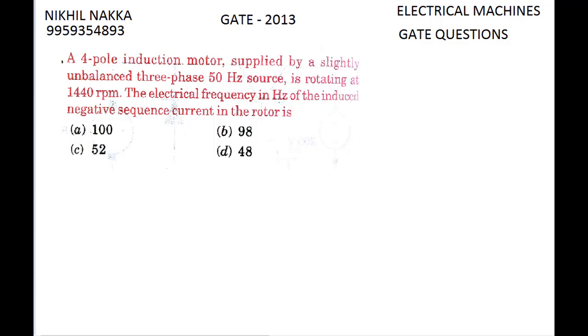How can we solve this problem? The general method of finding the frequency of induced current is we find the slip first. Before finding the slip, we have to find the synchronous speed of the RMF produced in the motor. The synchronous speed NS equals 120F by P, which equals...